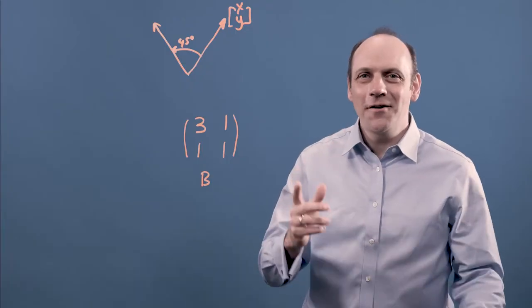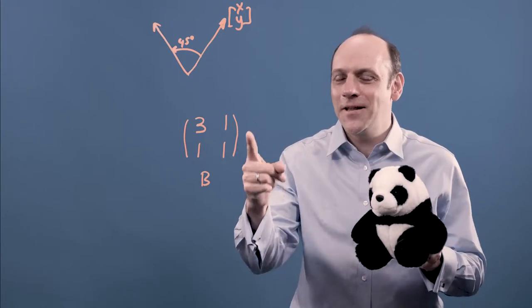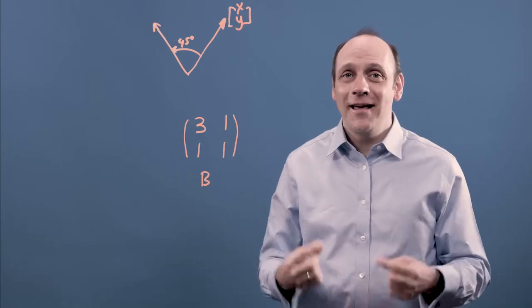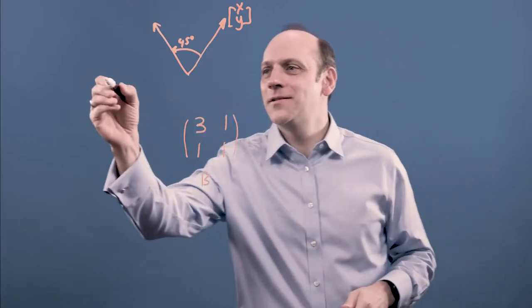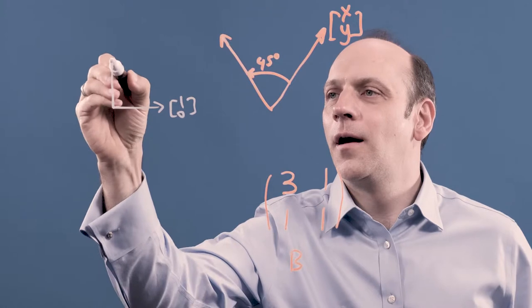But the problem is I don't know how to write a 45 degree rotation in Bear's funny coordinate system. I only know how to write down a 45 degree rotation in my normal [1 0; 0 1] system. So in my system, which is [1 0; 0 1],